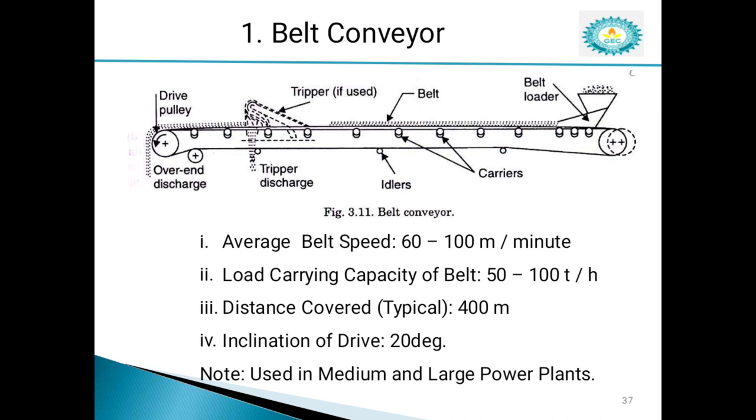Specifications are: the belt speed is 60 to 100 meters per minute, and load carrying capacity is 50 to 100 tons per hour. Distance covered is typically 400 meters, and inclination of drive is 20 degrees. This type of conveyor is used in medium and large power plants.